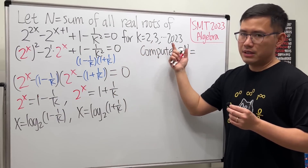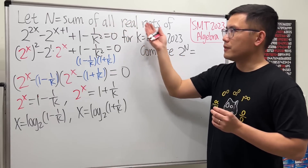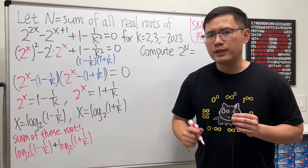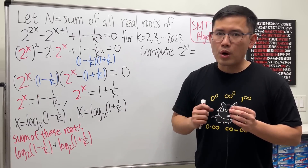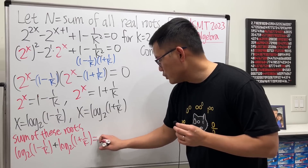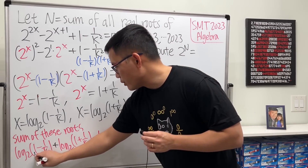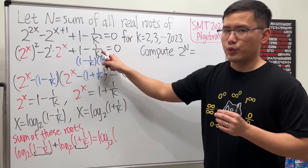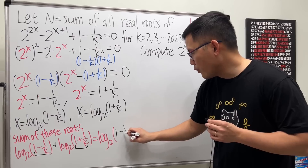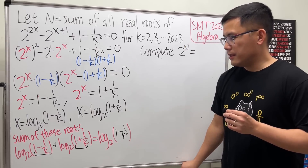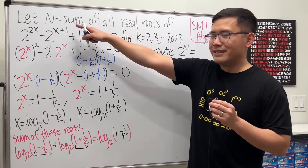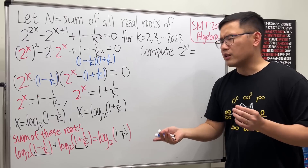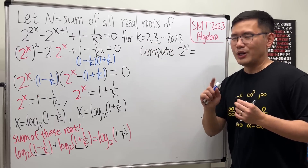We have all these k values, and N is the sum of all the roots. Adding the two solutions for each k using the logarithm property, we combine them into one single log: log₂((1 minus 1/k)(1 plus 1/k)), which equals log₂(1 minus 1/k²). N is the sum of all these from k equals 2 to 2023. You might wonder why we didn't let k equal 1 — you're about to see that.